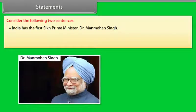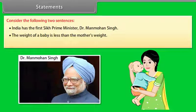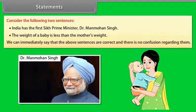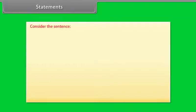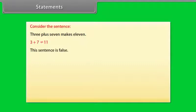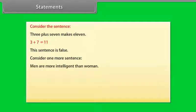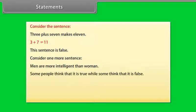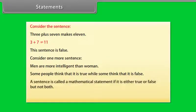The weight of a baby is less than the mother's weight. We can immediately say that the above sentences are correct and there is no confusion regarding them. Consider the sentence: 3 plus 7 makes 11 — this sentence is false. Consider one more sentence: men are more intelligent than women. Some people think it is true, while some think it is false. A sentence is called a mathematical statement if it is either true or false, but not both.